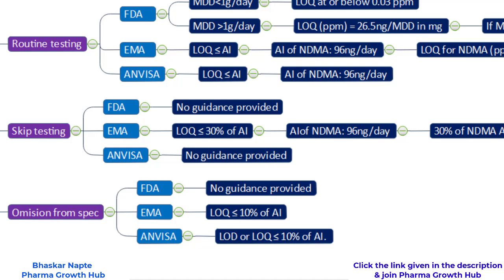If the nitrosamine is treated as absent, there is no need to include it in the specification and no need to routinely test for it to release your batch — you can omit that impurity from the specification. I hope you now understand the important role of the limit of quantitation in deciding on routine testing, skip testing, and omission from specification. Thank you so much.